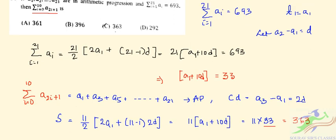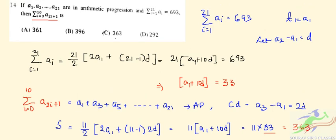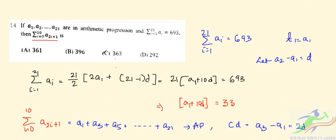So the summation of this term is 363. Checking with the correct options, the correct option is C, that is 363.